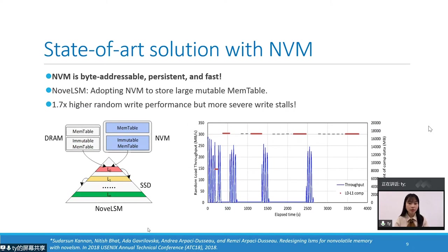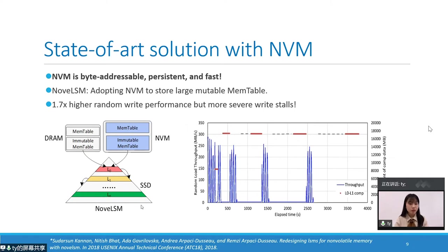Emerging non-volatile memory technologies have the property of fast access, byte-addressability, and persistency, providing a potential solution to address these challenges. NovSM from ATC'18 adopts NVM to store large mutable memory tables. NovSM improves random write throughput compared to RocksDB by about 1.7 times, and to some extent reduces write amplification. However, it significantly increases the size of unsorted Level 0, making Level 0 to Level 1 compaction data reach 15 GB. The large amount of compaction data severely extends the write stall period. Hence, the state-of-the-art solution NovSM is not sufficient to address both challenging issues.